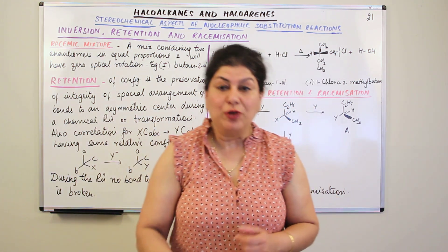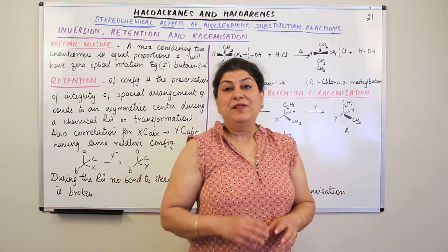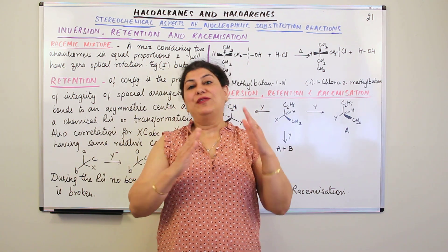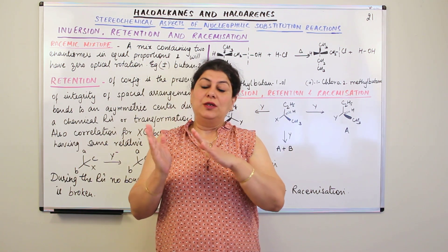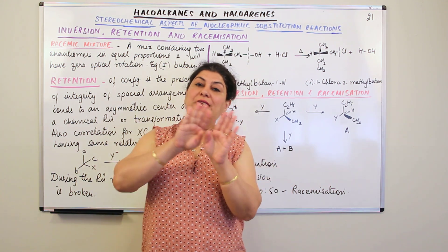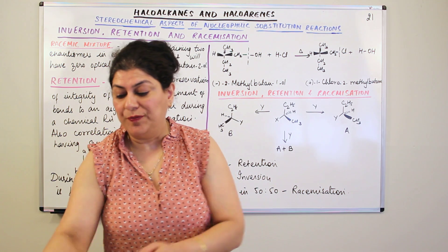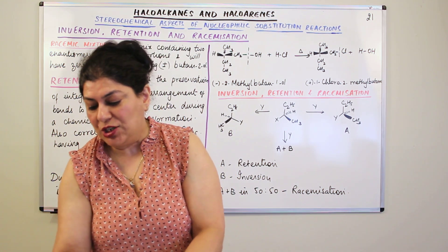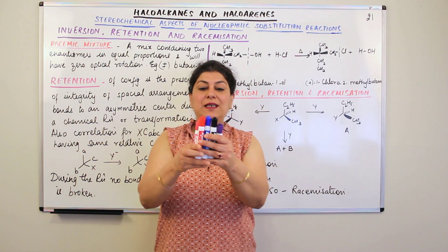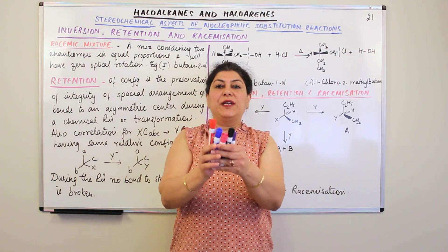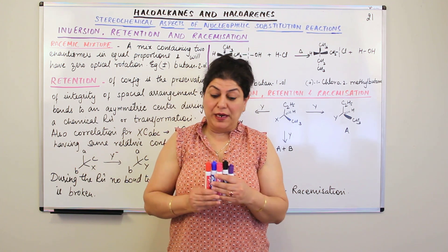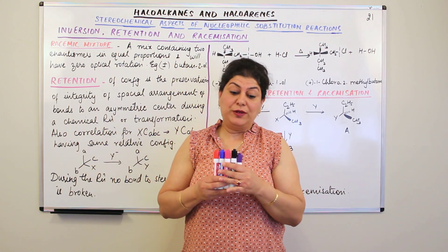We studied about plane polarized light, where I told you that when you have rays of light in different directions and you pass them through a nickel prism, they all get oriented in one direction and in one plane. Such light is known as plane polarized light — all the rays get oriented in one direction.